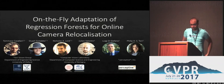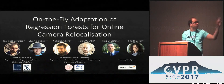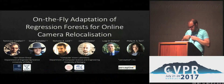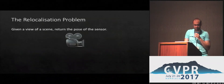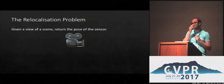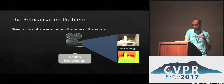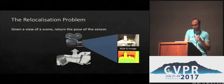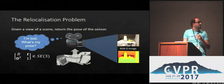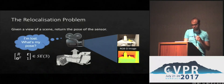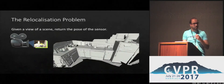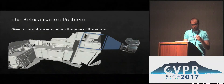Hi, I'm Tommaso Cavallari and this is our work on on-the-fly adaptation of regression forests for online camera relocalization. What is the relocalization problem? You have a sensor observing the scene and the system already knows something about the scene — for example, it could be a dense 3D surface map. The sensor is viewing the scene, but we have no idea from where. Relocalization means that the observation and scene data are used to determine the sensor's pose.